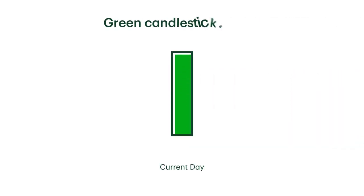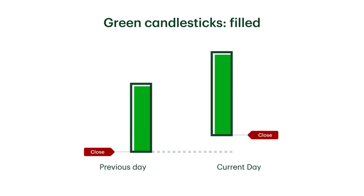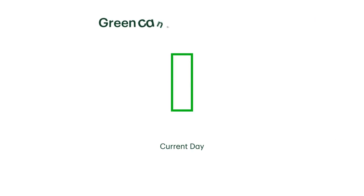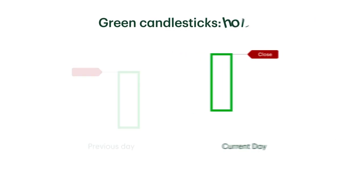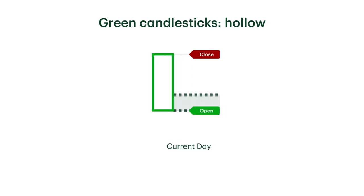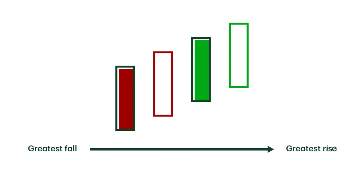Green candlesticks follow the same formula. When a green candlestick is filled, it means that its closing price was higher than the previous day's closing price but lower than today's opening price. When it's hollow, it means that the closing price was higher than the previous day's closing price and higher than today's opening price. It can help to visualize them in a range, going from the greatest fall to the greatest rise.